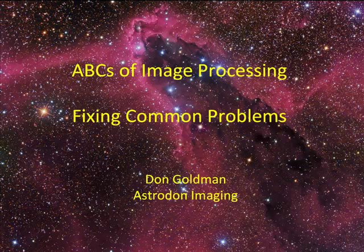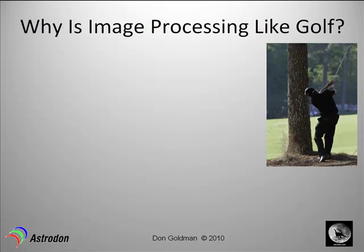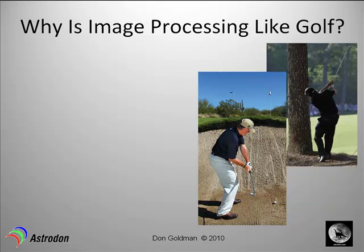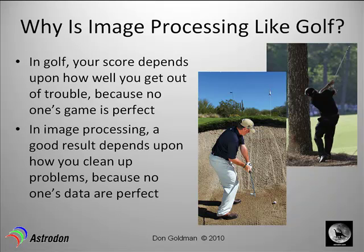This tutorial is about fixing common problems in Photoshop. I like to use a golf analogy. Here's one example of a troubled shot near a tree, and another of someone trying to get over a very tall bunker to the green. In golf, your score depends on how well you get out of trouble because no one's game is perfect. In image processing, a good result depends upon how you clean up problems because no one's data are perfect.